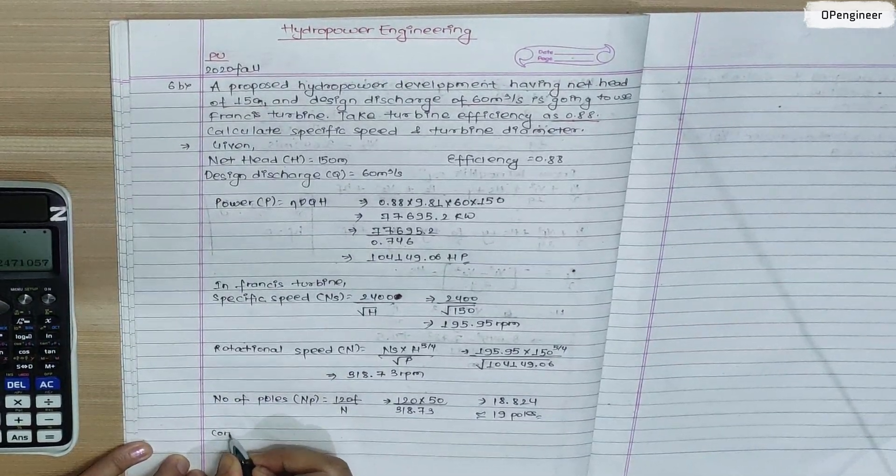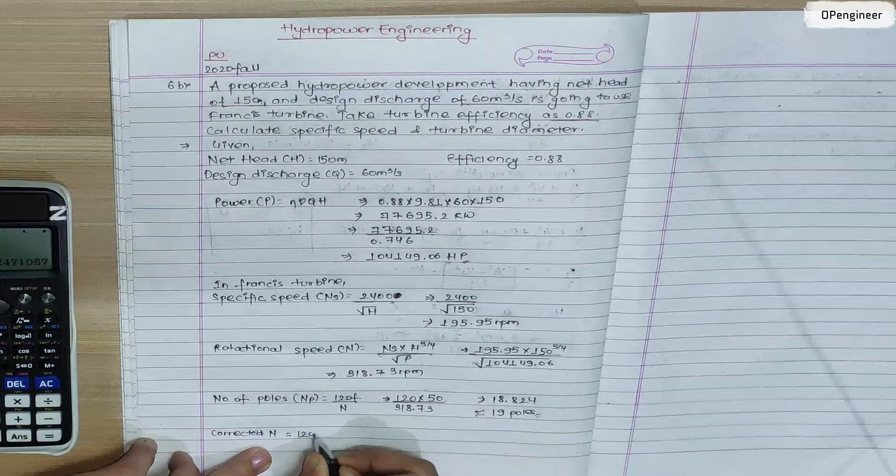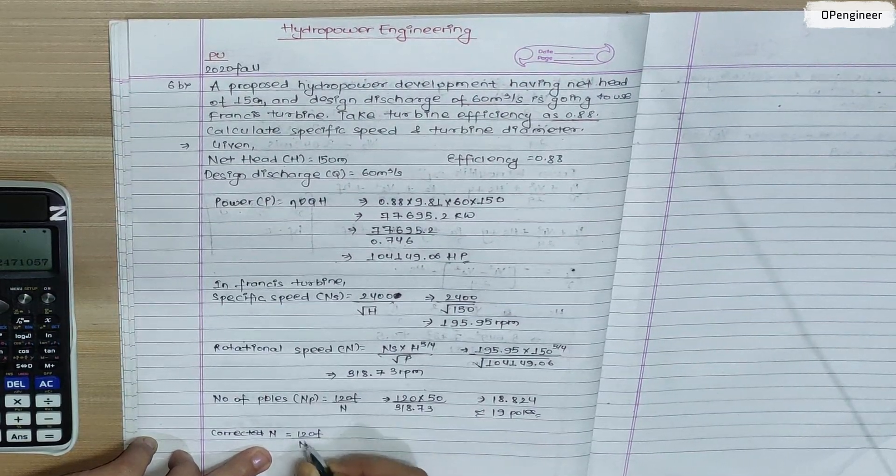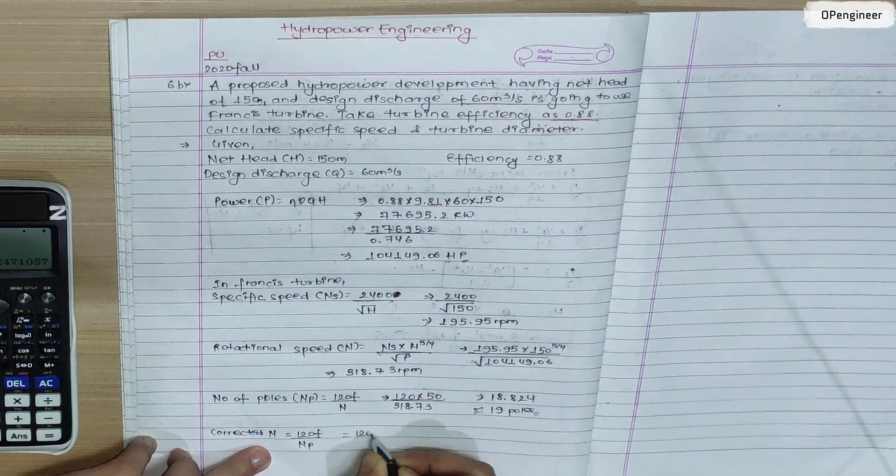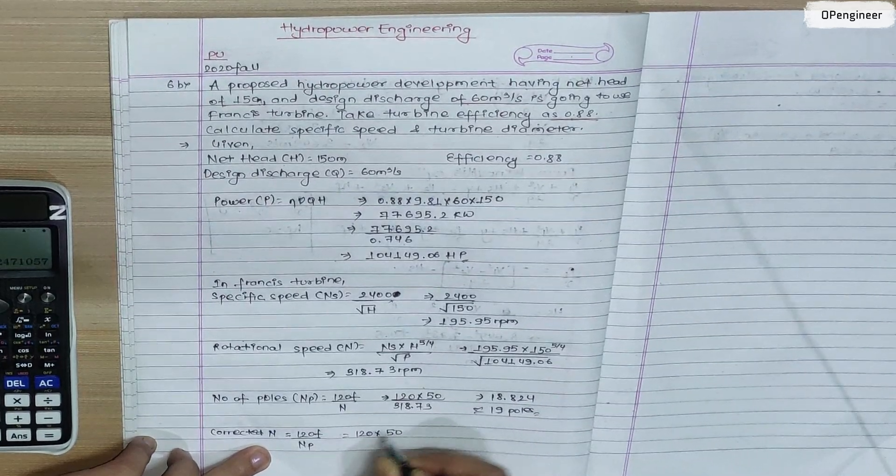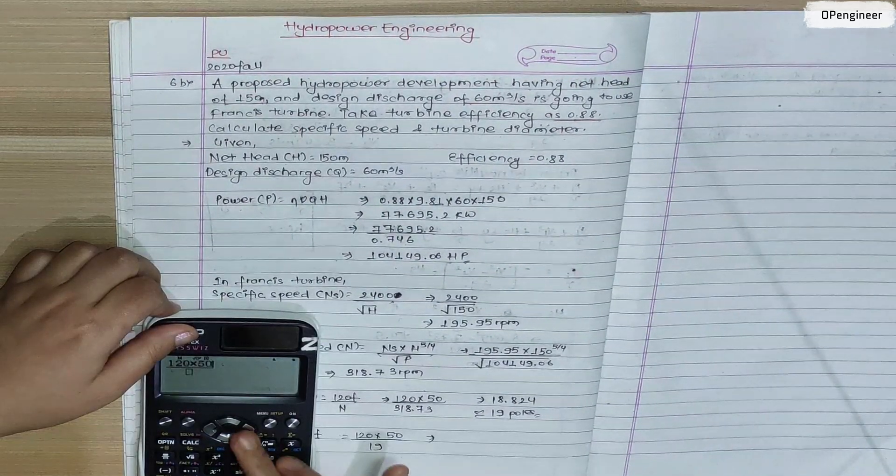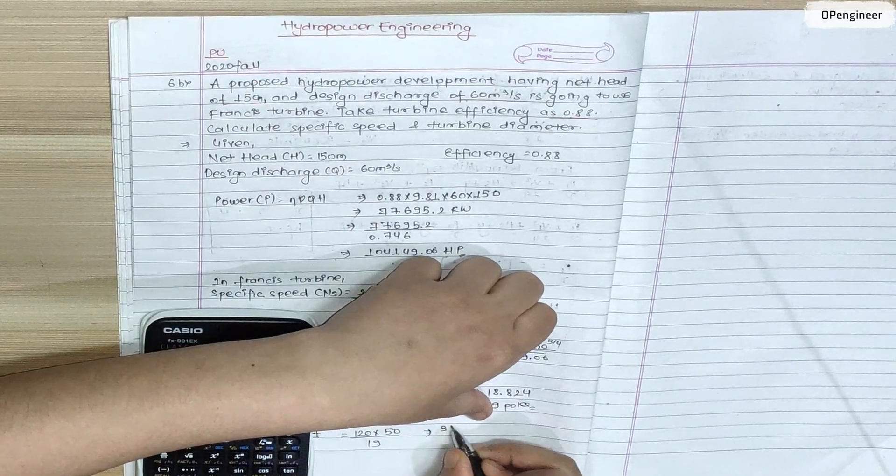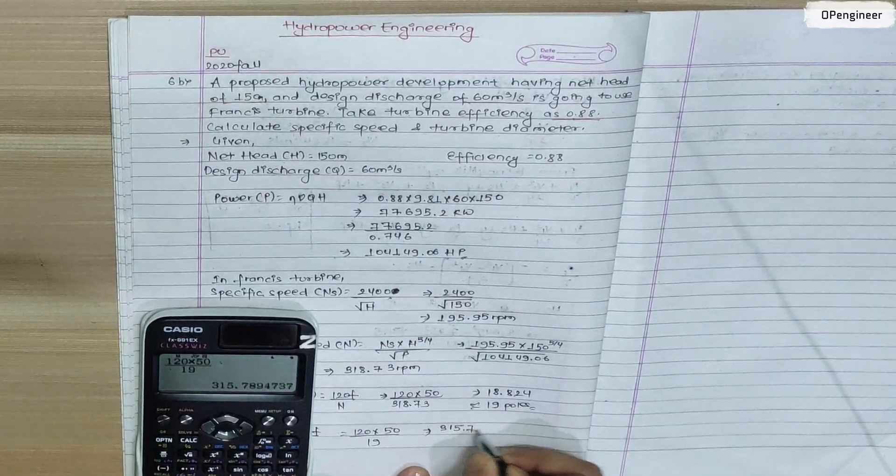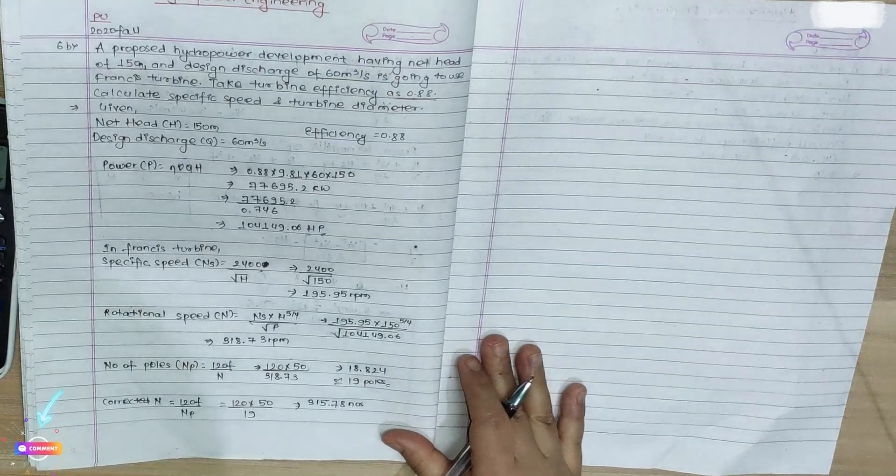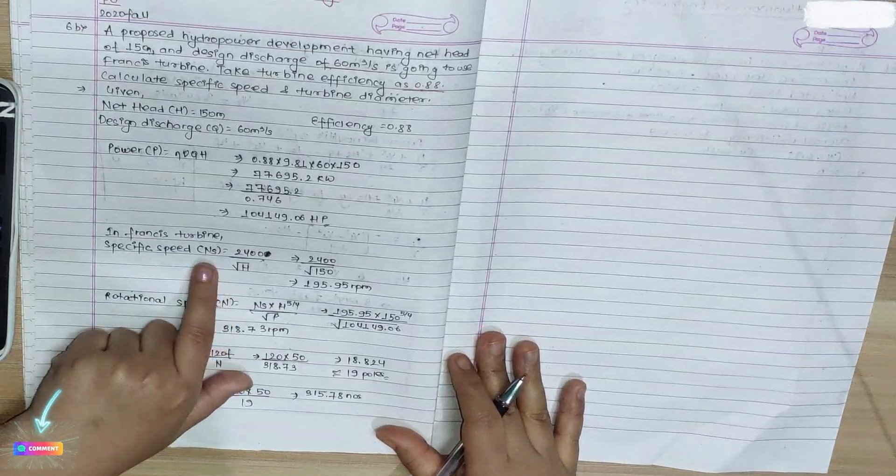Corrected N, so 120 into frequency upon P. So 120 into 50 by 19 poles equals 315.78.